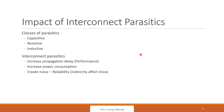With interconnect parasitics you have capacitance, resistance, and also inductance. Inductance is getting worse because the impedance of inductance is omega times L, and frequency is increasing — so Z_L increases and can't be ignored. These parasitics increase propagation delay, hurt performance, increase power (CV²), and create more coupling noise. This all links to PPAC.